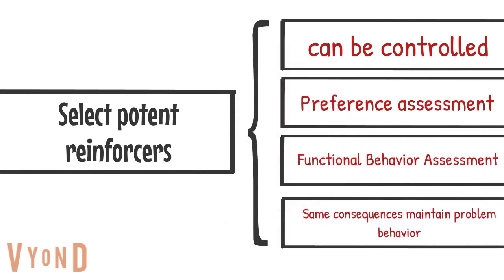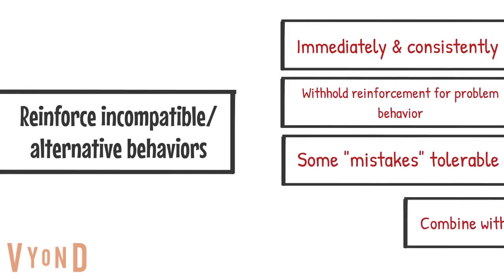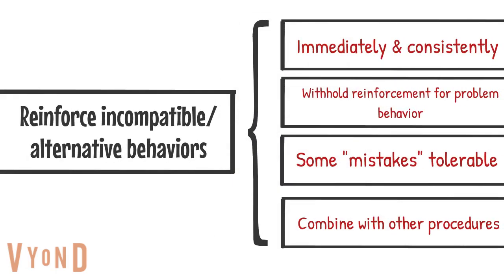Another guideline is to select potent reinforcers that you can control, identified through a preference assessment or a functional behavior assessment. The key point is that the incompatible or alternative behavior must meet the same function as the problem behavior. Reinforce the incompatible or alternative behaviors immediately and consistently, withhold reinforcement for the problem behavior, and combine with other procedures.